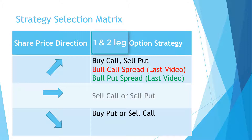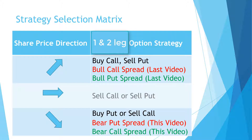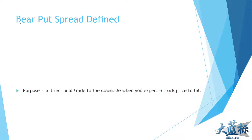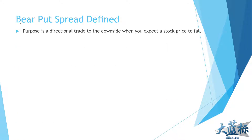We added the bull call spread and bull put spread to our portfolio — both used when forecasting the share price to rise. In this video we will add two more: the bear put spread and the bear call spread, both used when you forecast the stock to fall. The bear put spread is used when you have expectations that the share will be moving towards the downside.